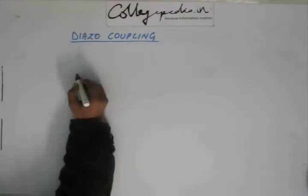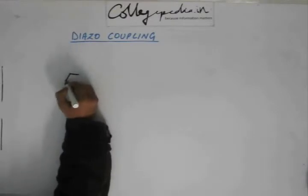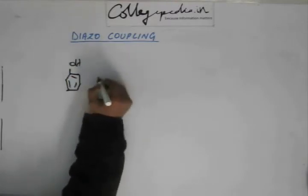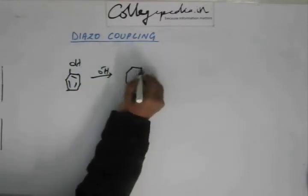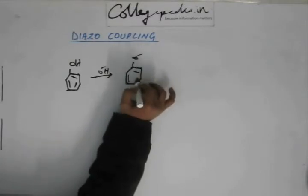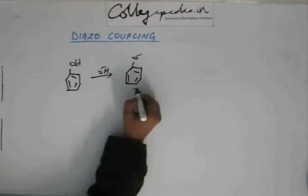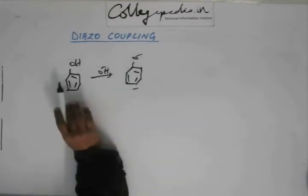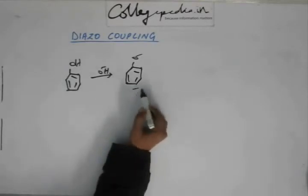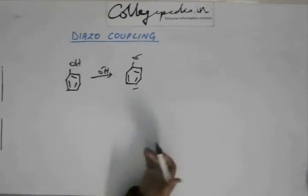Generally, the system during diazo coupling is weakly basic. The reason is: suppose you have phenol — in a weakly basic system there will be some hydroxide ion present, which will turn phenol into phenoxide. Phenoxide undergoes more extensive resonance than phenol because the negative charge on oxygen must be stabilized. So the negative charge does more enthusiastic resonance with the phenyl ring, increasing the charge polarity at the para position, which increases the extent of reaction with the diazonium salt.